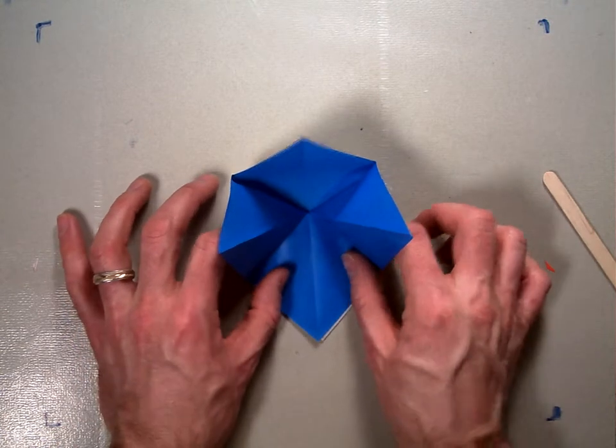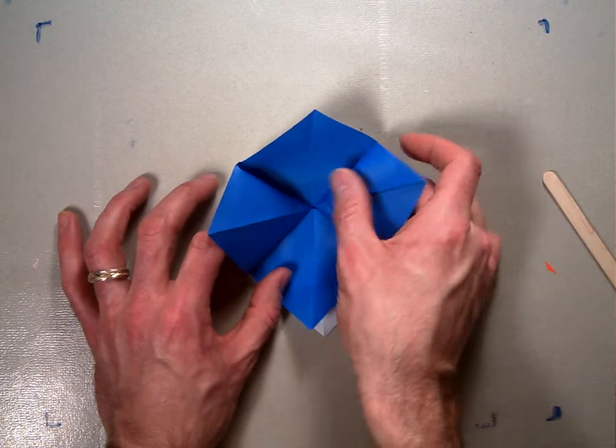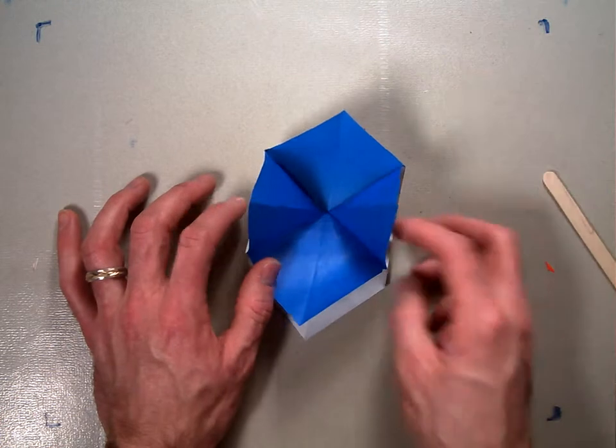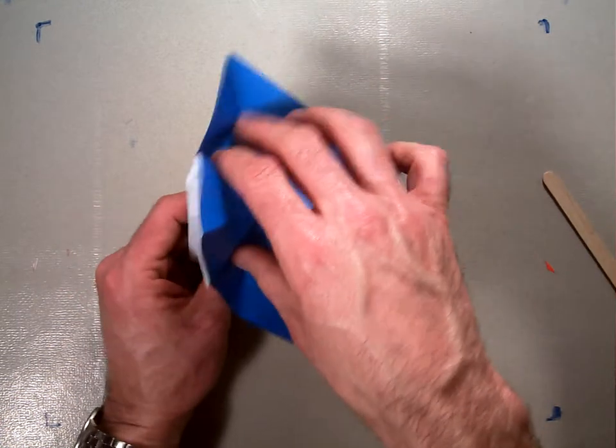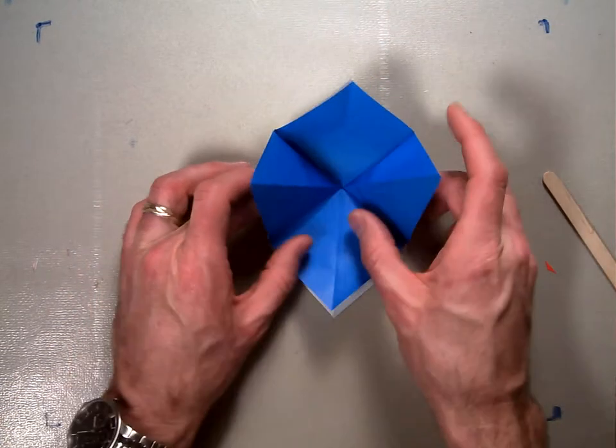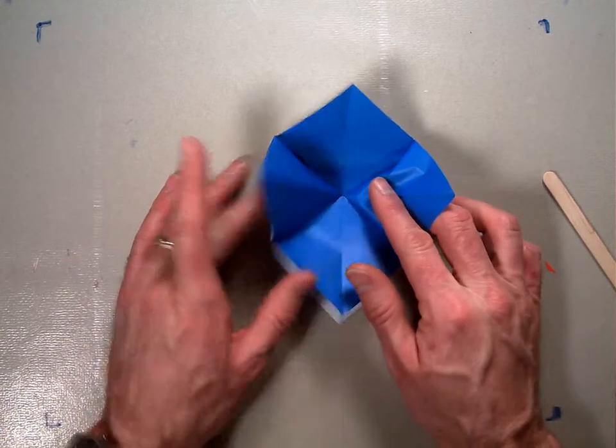Now, once you've got that folded open, if you're very careful, you can do two things. You can either leave it like this, and it looks kind of cool because it's just up, or you can take these two corners here and kind of squash fold them down.